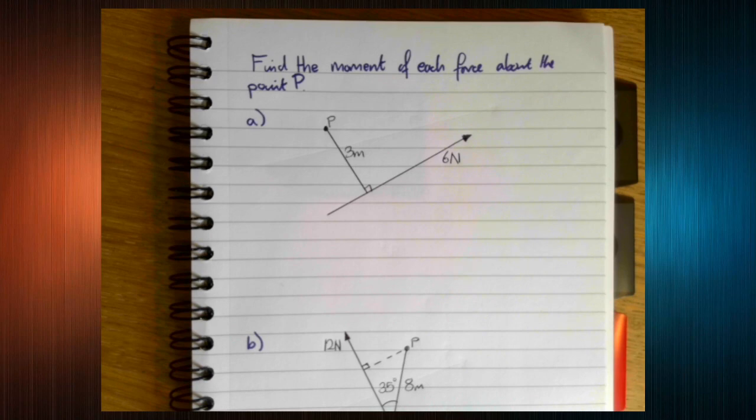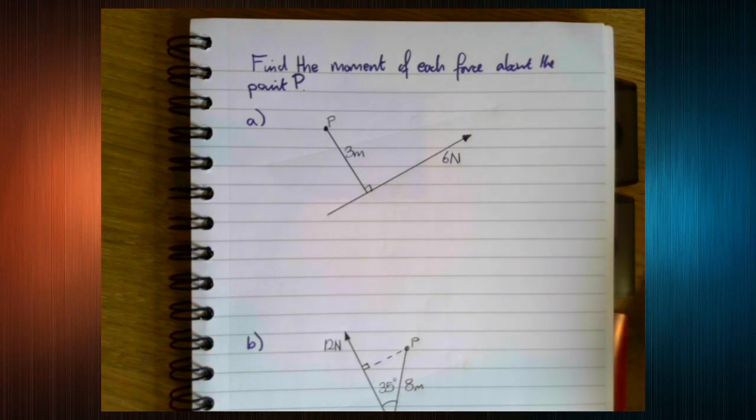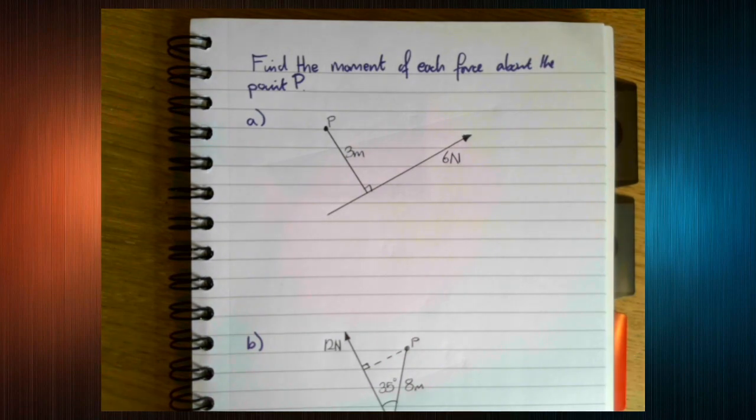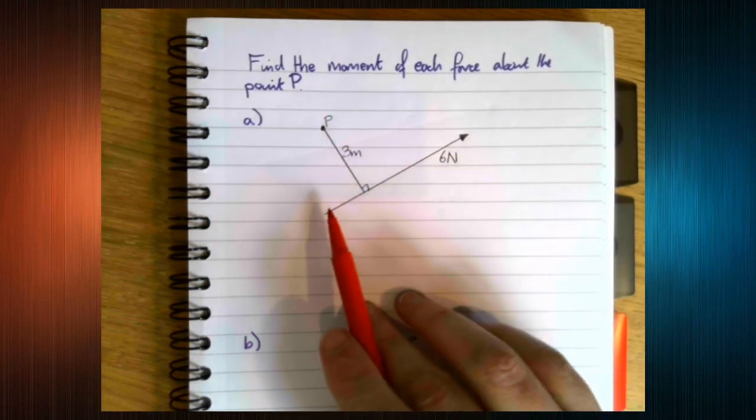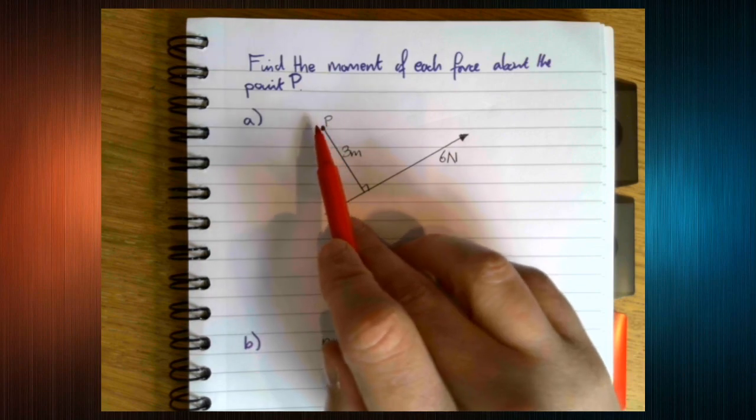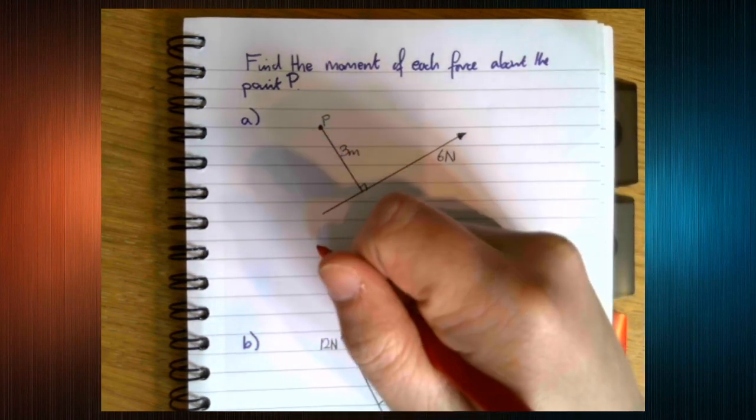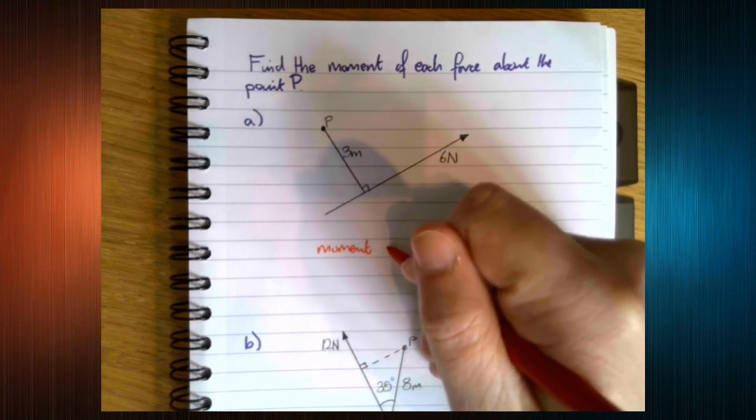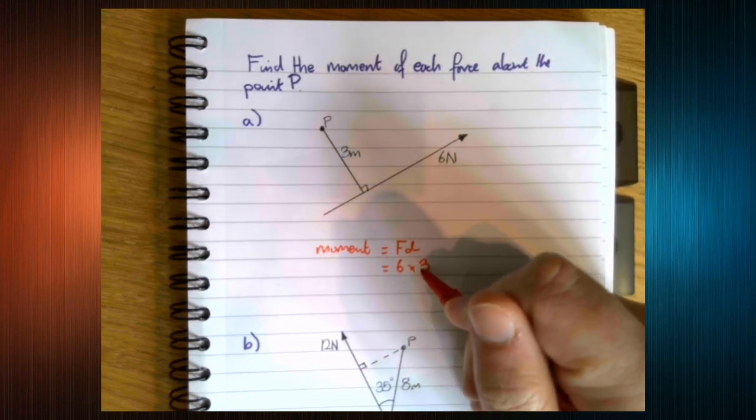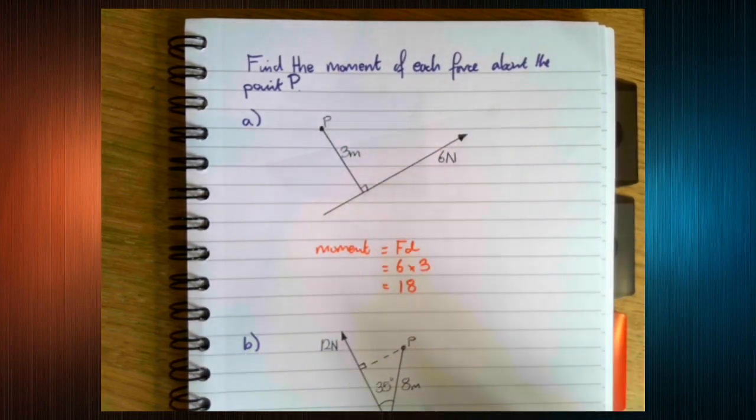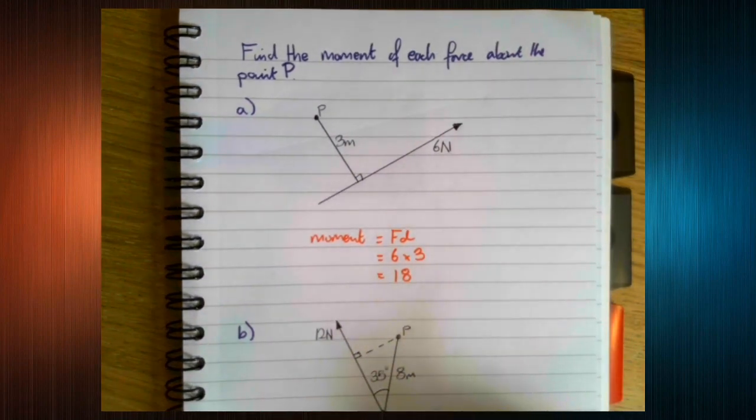What we're going to do now is just a couple of very basic examples to get you used to calculating and practicing moments. So this first example is very straightforward. We want to calculate the moment of this force around the point P. So we've got our force, which is 6 newtons, times by our perpendicular distance. So our moment is force times distance, which is going to be 6 times 3, which is 18.